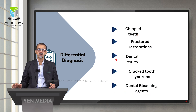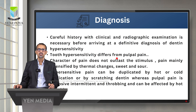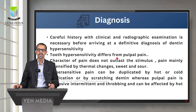Conditions similar to dentinal sensitivity include a chipped tooth, fractured restorations, dental caries, cracked tooth syndrome, and sensitivity following dental bleaching agents. Careful history with clinical and radiographic examination is necessary for a definitive diagnosis. Dentinal sensitivity differs from pulpal pain: the character of pain does not outlast the stimulus and is mainly intensified by thermal changes, sweet, or sour stimuli. Hypersensitive pain can be duplicated by hot or cold application or by scratching the dentine, whereas pulpal pain is explosive, intermittent, throbbing, and affected by temperature.